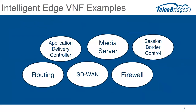What are some VNF examples — the things people are working on to deliver virtualized network functions? It begins with routing; SD-WAN is a real hot one — moving from MPLS-type networks over to dynamic broadband-based communications and distributing that traffic. Firewall, application delivery controllers, load balancers, media servers, and now session border controller software. These are the kinds of things we're starting to see as VNFs to be delivered on these kinds of platforms.